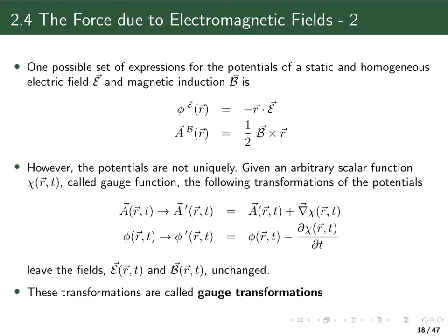We can change the vector potential or the scalar potential and get a new scalar and vector potential by adding here for the vector potential the gradient of a function which is a function of space and time, and here to the scalar potential subtract the time derivative of the same function.